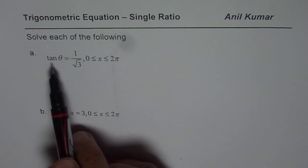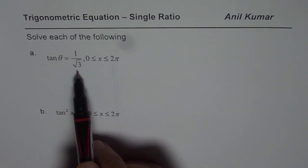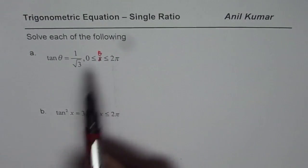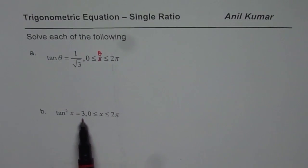The two questions are tan theta equals 1 over square root 3 where theta is between 0 to 2 pi, and tan square x equals 3 where x is between 0 to 2 pi. You can pause the video, solve this question as per our steps and then check with my answer.